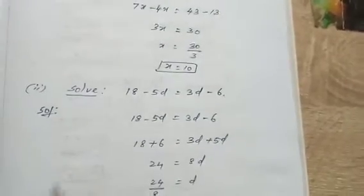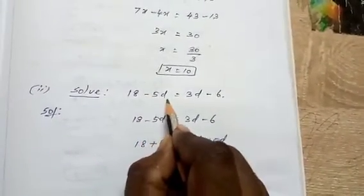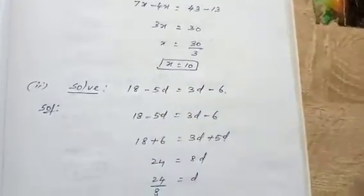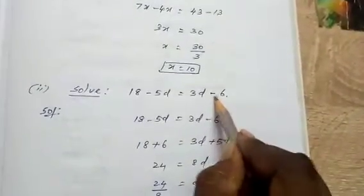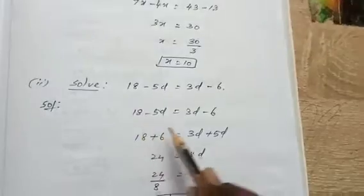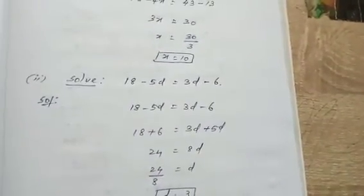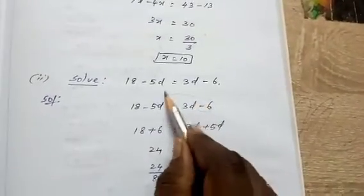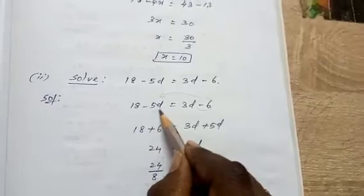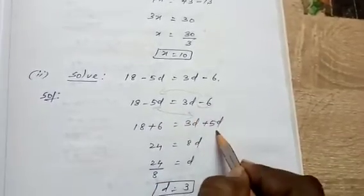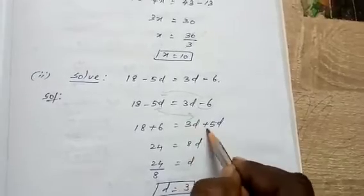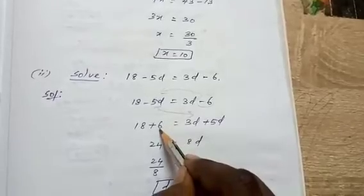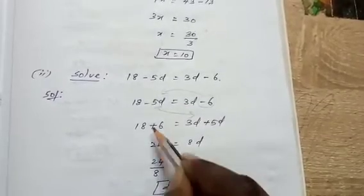The next example: Solve 18 - 5d = 3d - 6. Taking variables on one side and constants on the other: -6 transposed to the left becomes +6, and -5d transposed to the right becomes +5d. So the left hand side is 18 + 6, which equals 24.